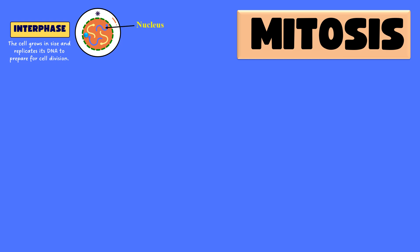In interphase, a typical cell has a nucleus which contains the genetic material. The nucleus is surrounded by the nuclear membrane, and there is a nucleolus also present within the nucleus. The nucleus has the genetic material, which are the chromosomes. During interphase, the DNA gets duplicated. Interphase consists of three sub-phases: G1 phase, S phase, and G2 phase. DNA gets duplicated in the S phase, that is the synthesis phase. During interphase, the cell has duplicated chromosomes and also has the centriole, which will make the spindle fibers.